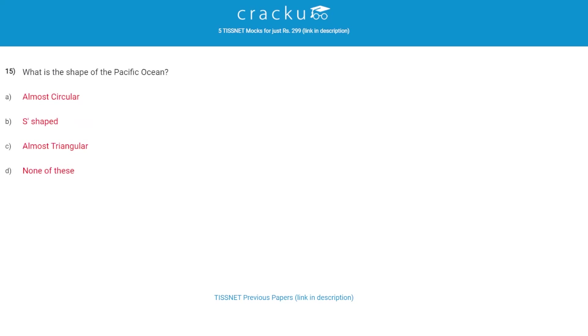What is the shape of the Pacific Ocean? The correct answer is triangular — almost triangular.